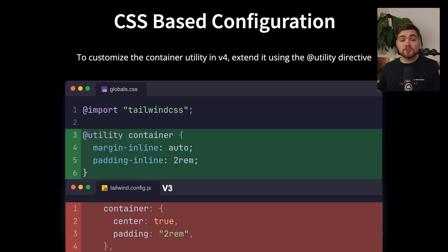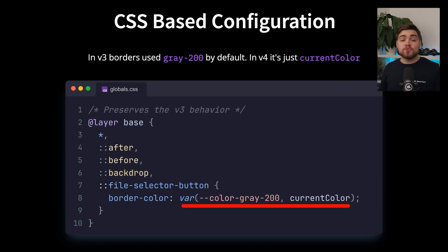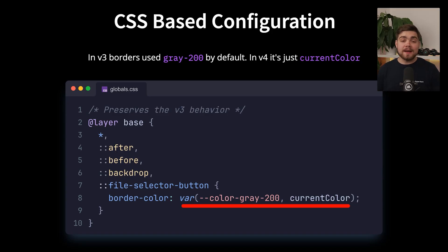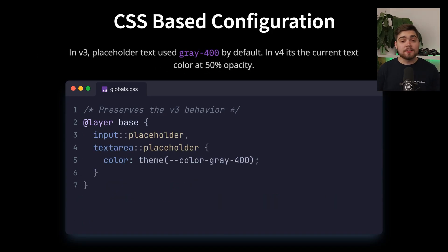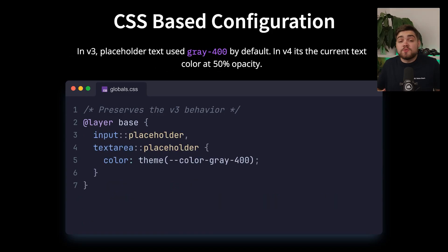Since we no longer have JavaScript configuration files, options like container with center and padding have all been moved directly into the CSS file with just pure CSS. They've also made a small change to how the default border color works, changing it to just use current color, and you can add something if you want backwards compatibility. They've also changed the preflight placeholder color to use 50% opacity of the current color.